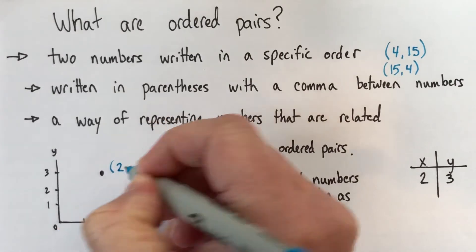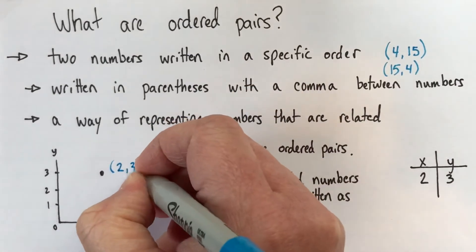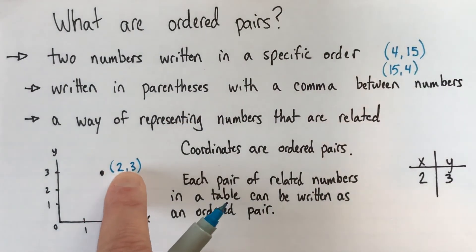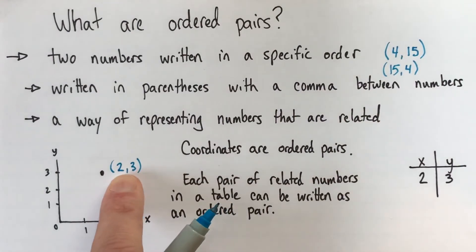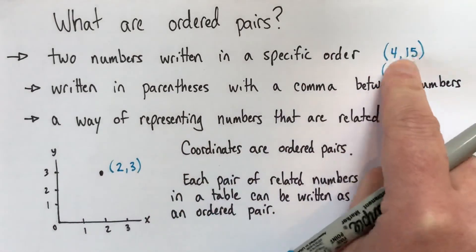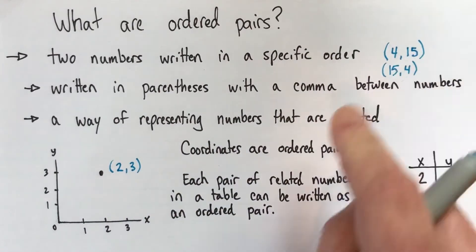So, we say that the coordinates of this point are 2, 3, and this 2, 3 here is an ordered pair. So, this is another example, a specific example of the order being important.